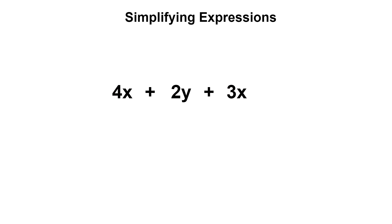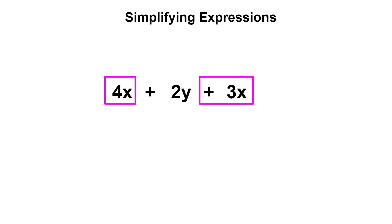I'm going to draw a box around the first term 4x and combine it with the like terms in the expression. What other terms have the variable x? That's right — 3x. So let's draw a box around that term as well. I've also included the addition sign to the left of 3x to ensure I carry out the correct operation. So 4x plus 3x equals 7x.